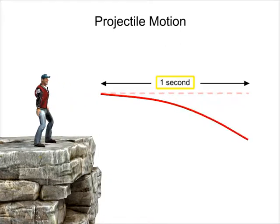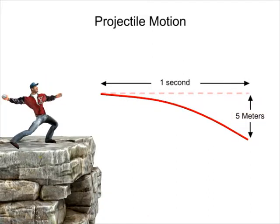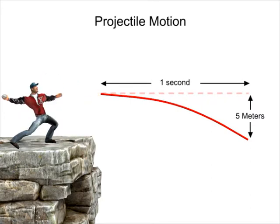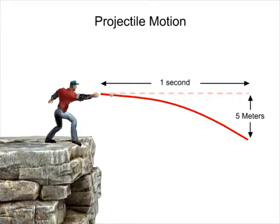After one second, the ball will have fallen five meters from the imagined line. No matter how fast the person throws the ball, this fallen distance of five meters after one second of air time will remain the same.